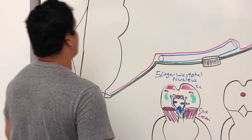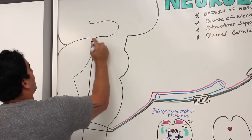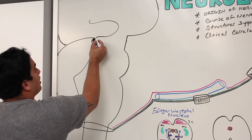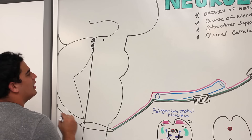The third cranial nerve is found at the level of the superior colliculus, while the fourth cranial nerve is found at the level of the inferior colliculus. The fibers exiting from the third cranial nerve nucleus are somatomotor fibers — specifically GSE fibers, or general somatic efferents — which supply some of the extraocular eye muscles.